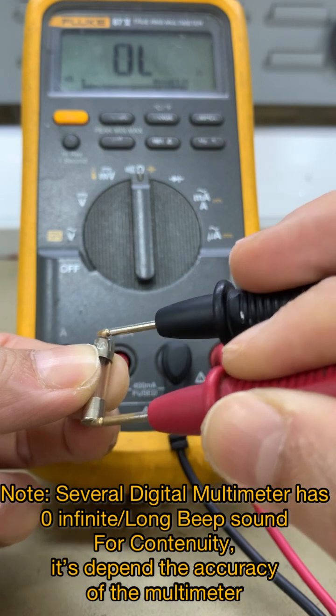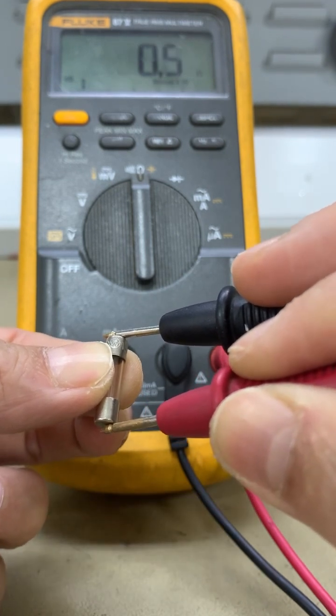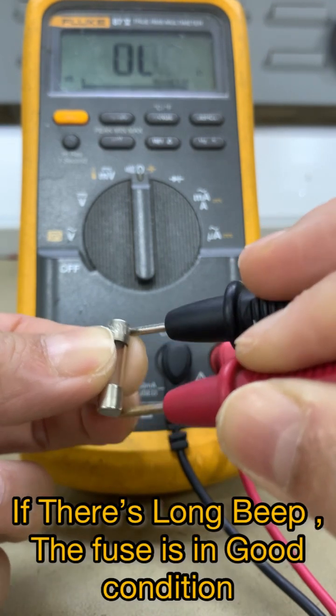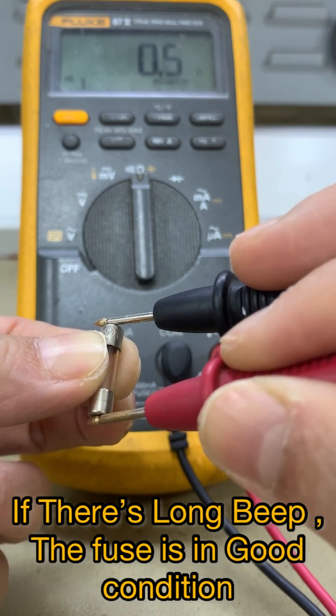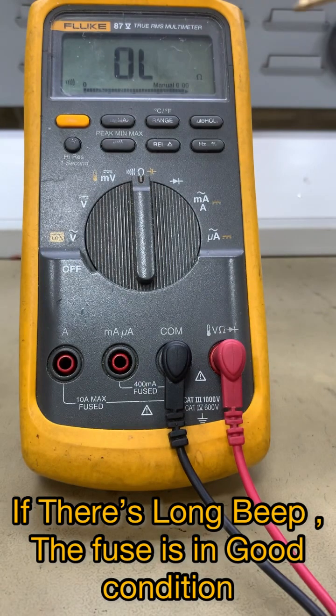So there's a long beep, which means there's continuity, so the fuse is okay. The fuse is good if there is a long beep. If there is no beep, it means the fuse is open.